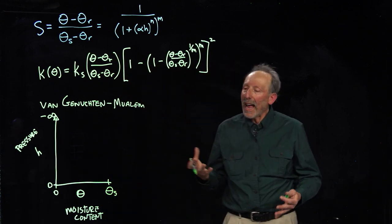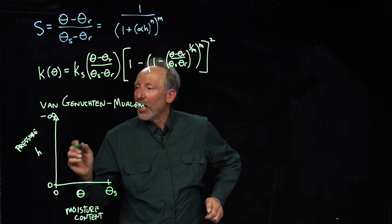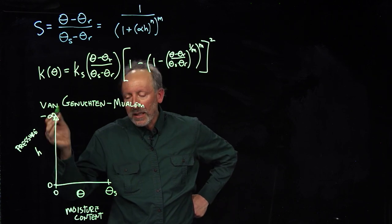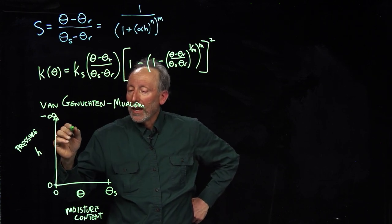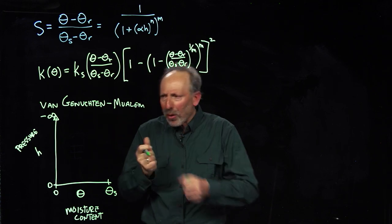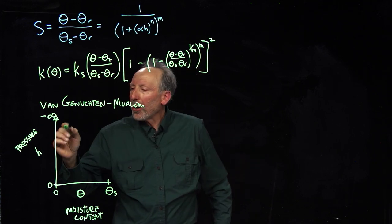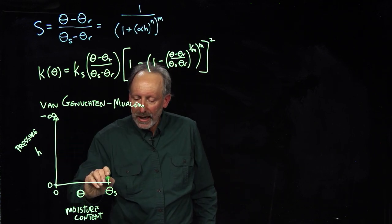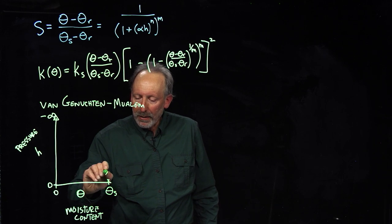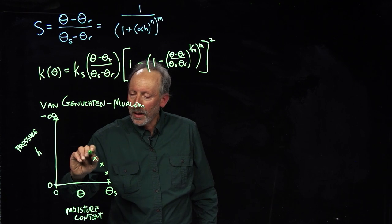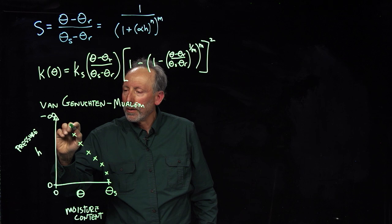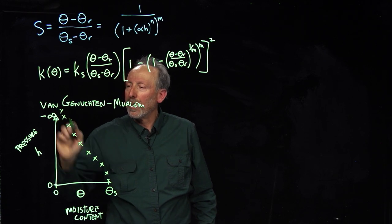So we have some experimental data. That's where we start always, right? So we're going to start with just some data where we did, let's say, a drainage experiment. So we start with this system saturated, we pull the water out, and we pull harder and harder. And so it's saturation, it's down here. We have a data point there, and we have data points here. Here, we're pulling water out.